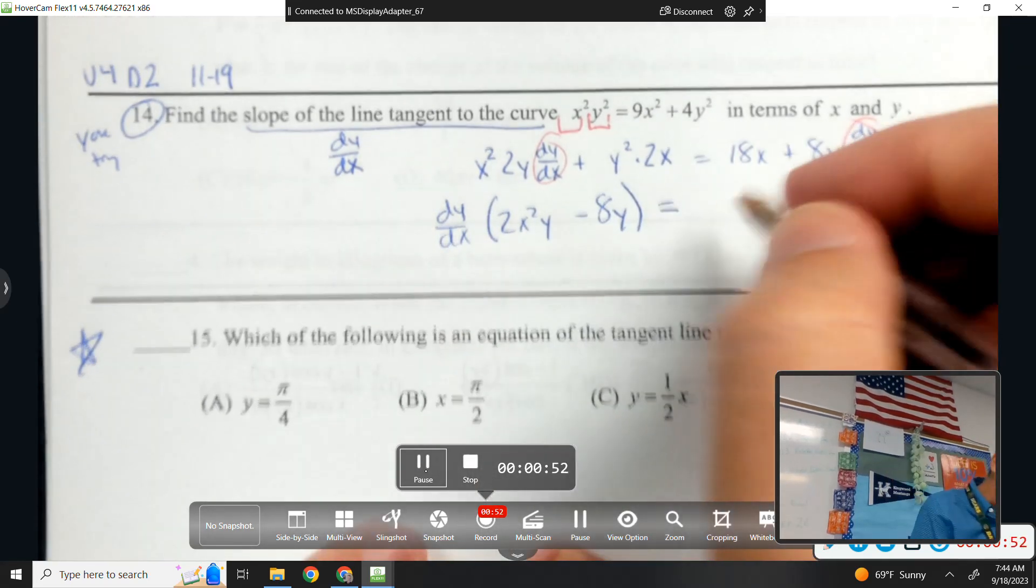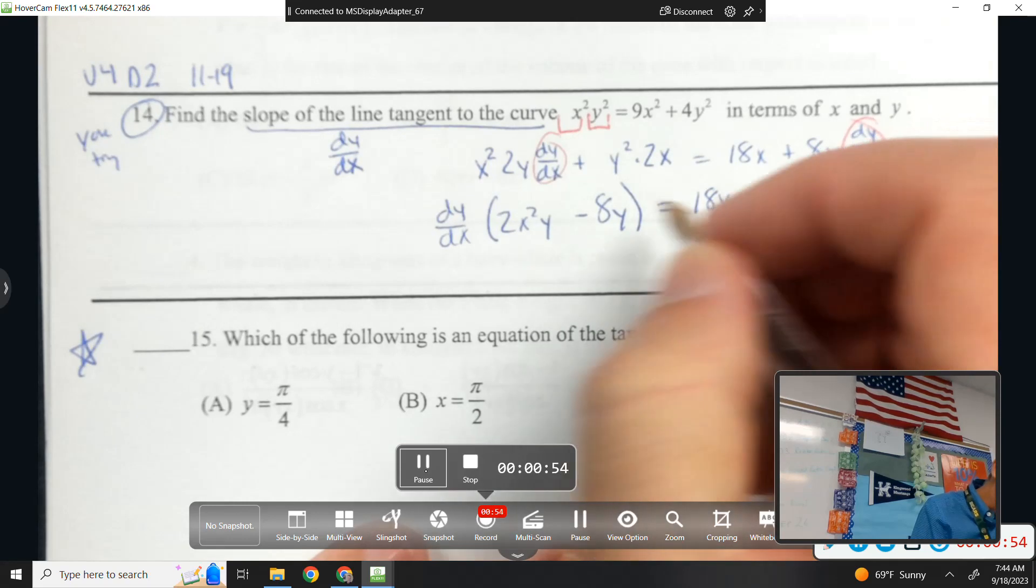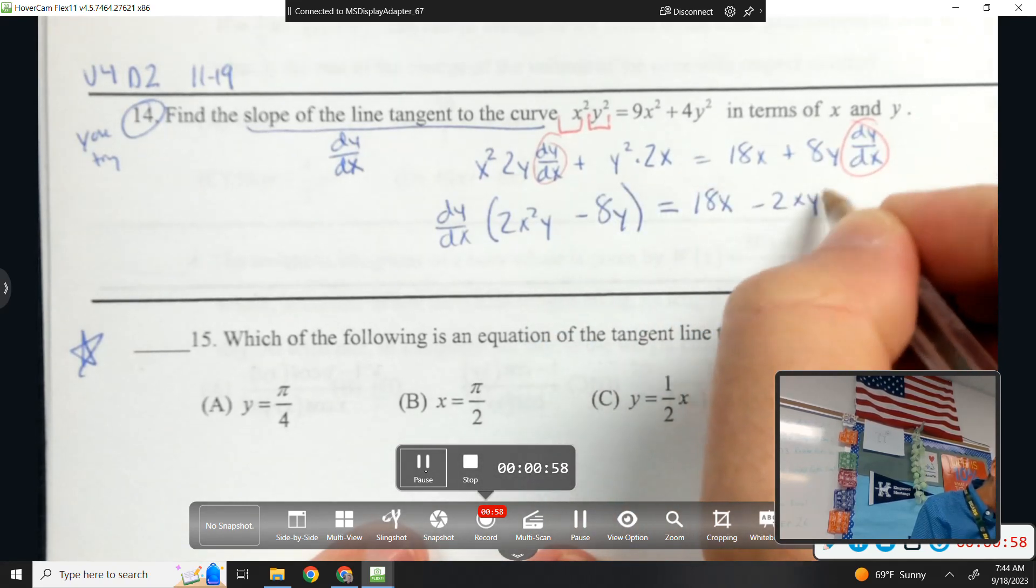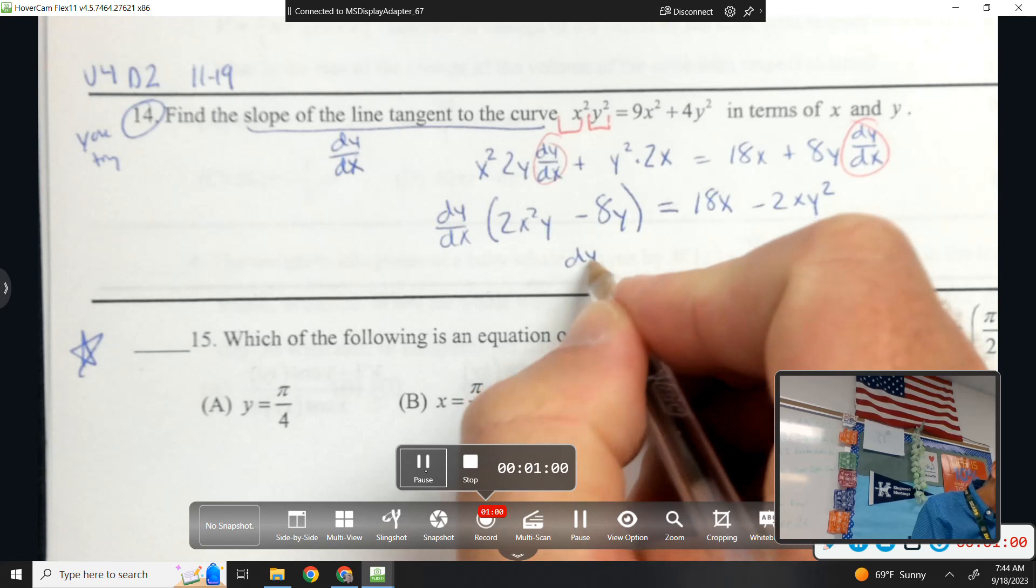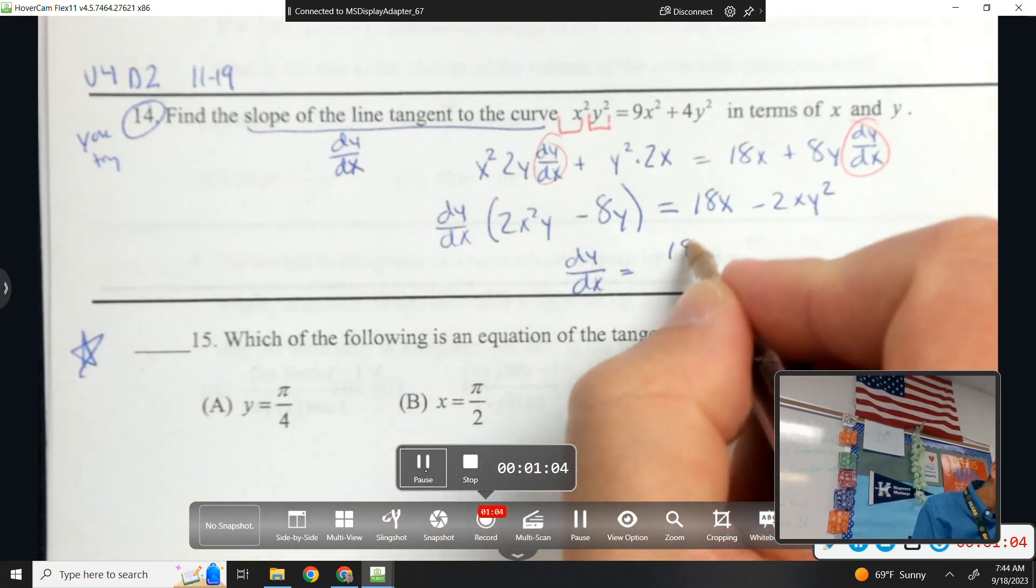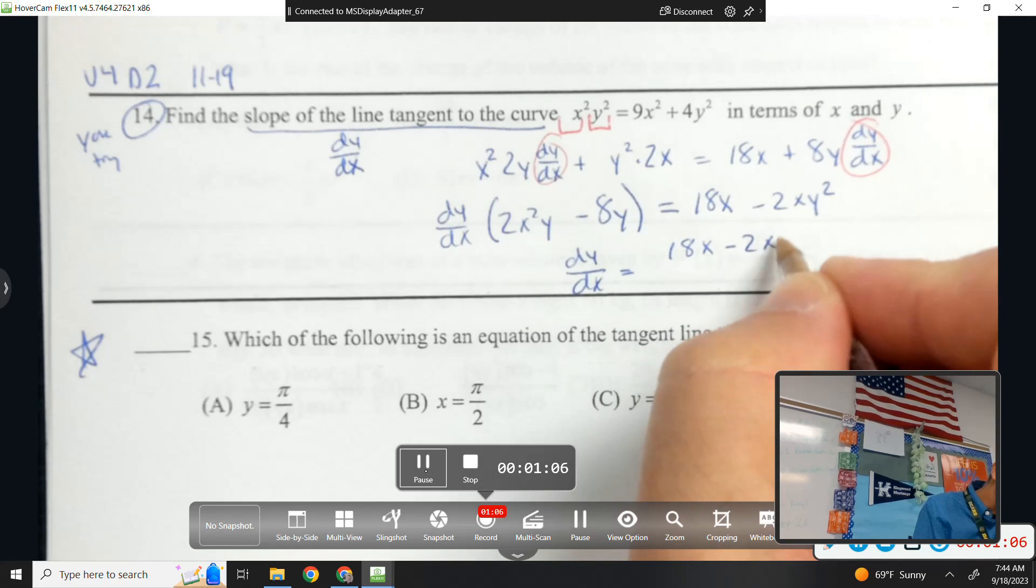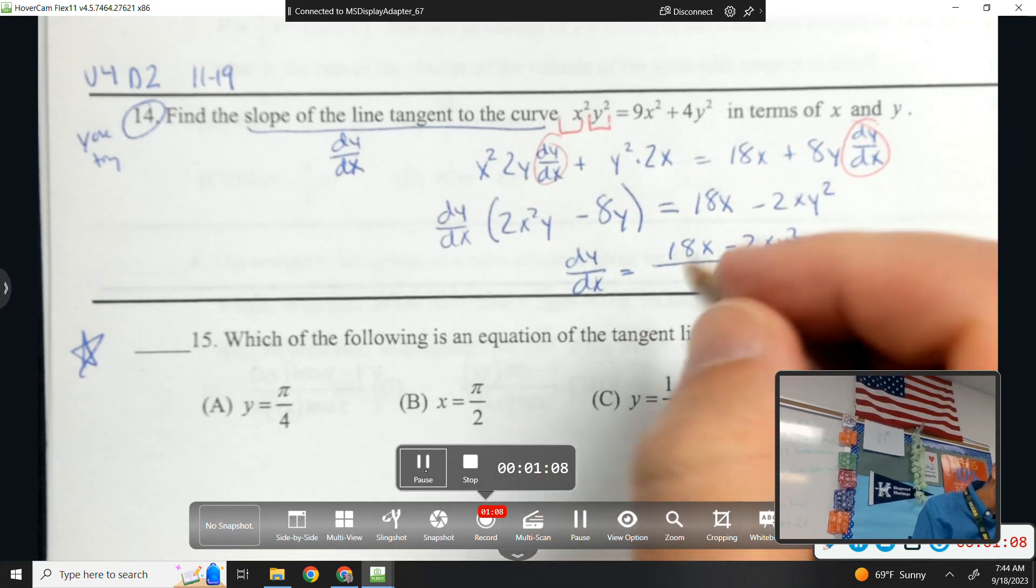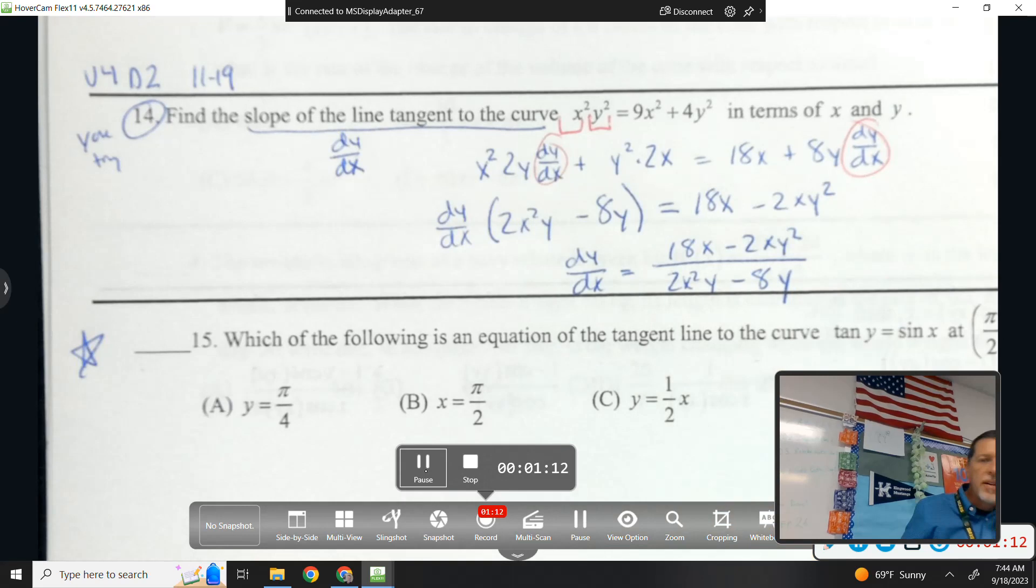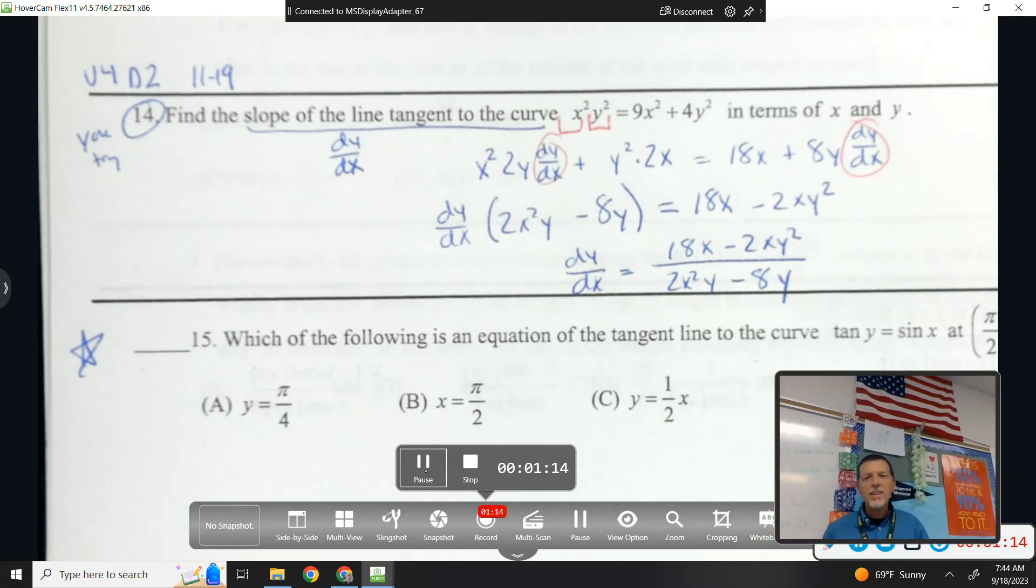I move everything else to the right. So 18x minus 2xy squared. And then I'll just divide by all of this stuff. And that is a safe stop.